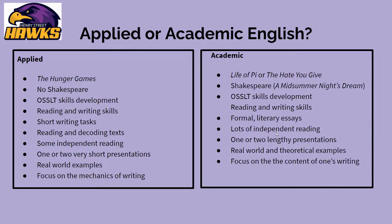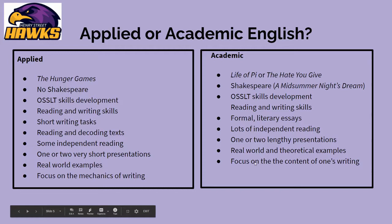There's much more independent reading in the academic stream, as well as one or two lengthy presentations. In the applied level course, there's some independent reading but not as much, and one or two short presentations with more real world examples. The focus in the applied level course is much more around the mechanics of writing, rather than the content of one's writing and the ability to analyze a text in a critical way.